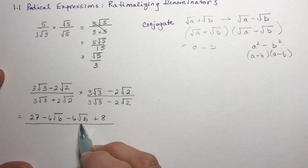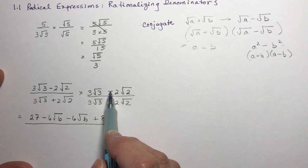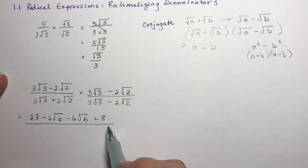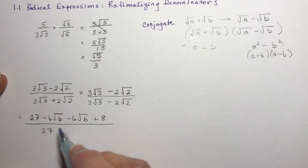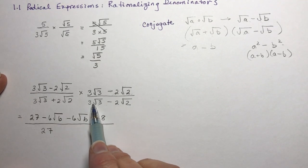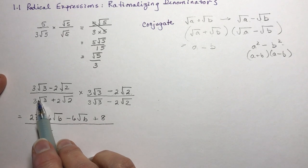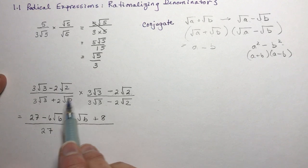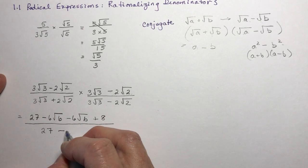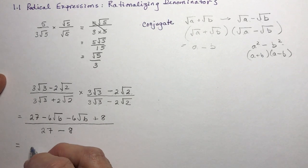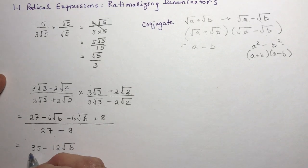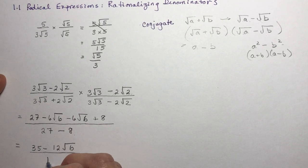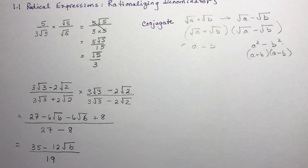And then the denominator — you see we didn't get rid of the radicals in the numerator because this wasn't a conjugate. So 3 root 3 times root 3: that's 9 times 3 is 27. And 3 root 3 times this would be minus 6 root 6, then plus 6 root 6 — so those cancel. I just need to multiply the outer terms: that gives me minus 4 times root 4, or minus 4 times 2, which is minus 8. So that gives me 27 and 8 is 35, minus 12 root 6. Simplifying: 27 minus 8 is 19, so the denominator is 19. That's rationalizing the denominator by multiplying by the conjugate.